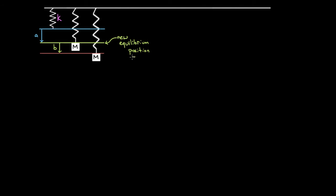This new equilibrium position is not at the spring's natural length — it's displaced a distance A below it, because the spring must battle gravity. At equilibrium, the spring force upward, KX, minus the gravitational force MG must equal zero. So the stretch at equilibrium is X = Mg/K. This distance A equals Mg/K — this is how far the mass hangs down from the spring's natural length at the equilibrium position, and this result will be key.